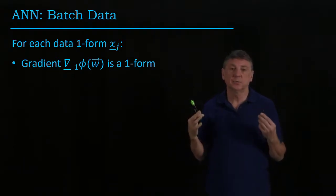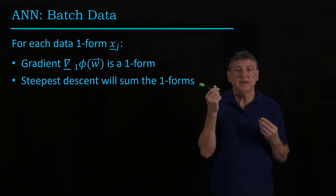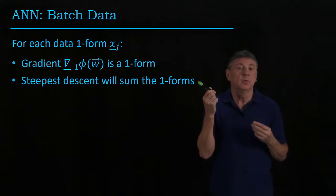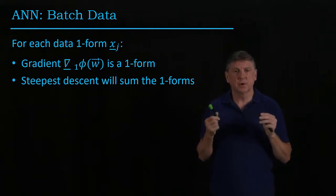This is similar to what we had for a single artificial neuron. The steepest descent that we had for a single artificial neuron was the sum of the one-forms. We did this in terms of a product, but we can also do it just in terms of a straight sum.